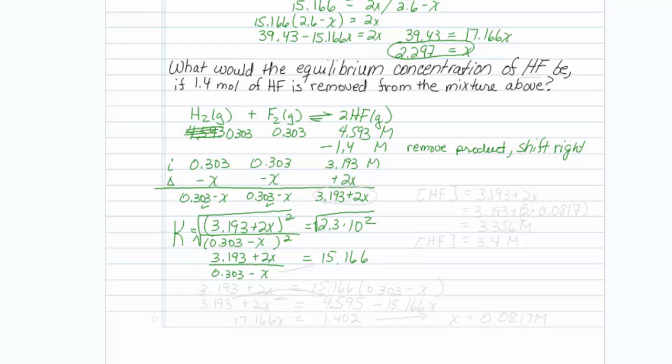I must get rid of the bottom, so 3.193 plus 2x is equal to 15.166 times, I'm going to move this across, 0.303 minus x. Once again, I need to multiply this in the parentheses and collect variables. 3.193 plus 2x is equal to 4.595 minus 15.166x.